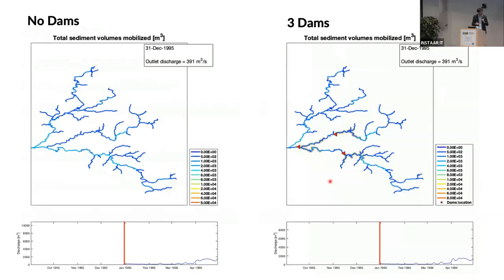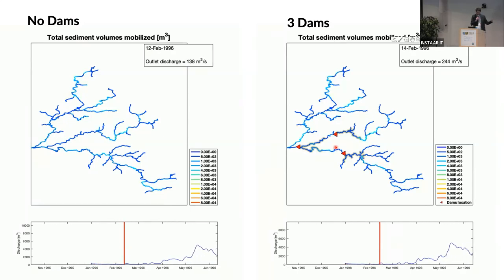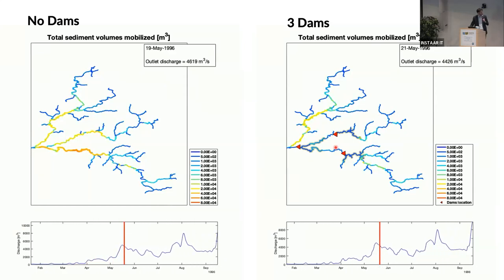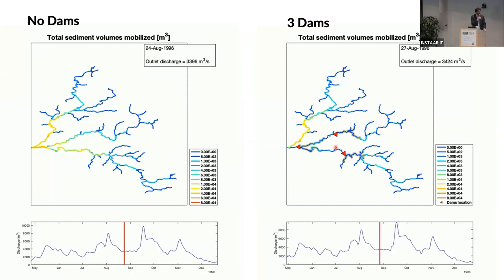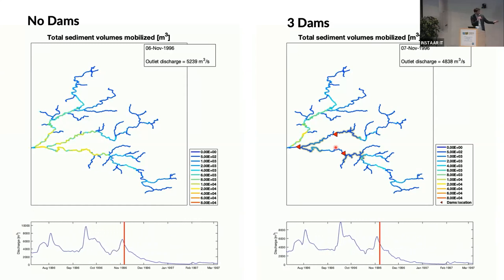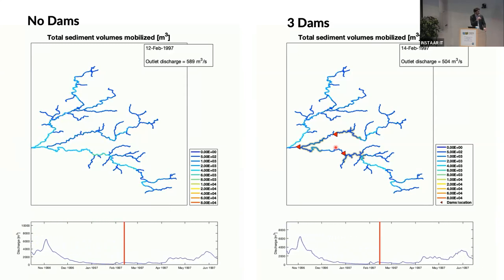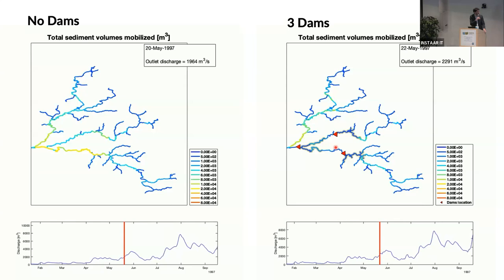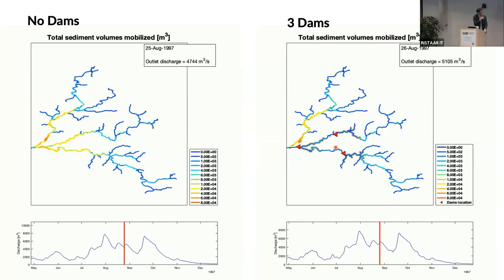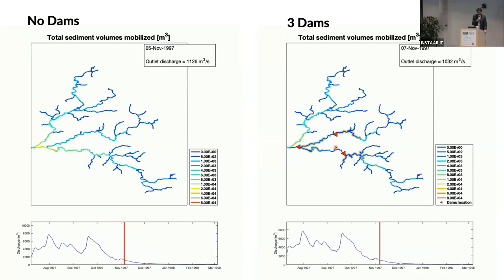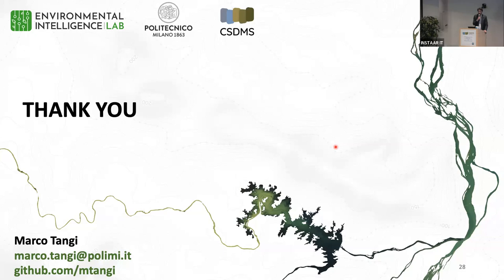This video shows the water discharge, where the color in each reach represents the amount of material transported in each time step. We compare a situation without reservoirs versus one with three large reservoirs in the lower part of the river system. We are in a monsoonic region, so during the dry season no sediment movement is registered. As we move toward a new monsoon season, you will see how sediment changes over time, especially during the first transport events. Thank you for your attention — if you have any questions, please ask.